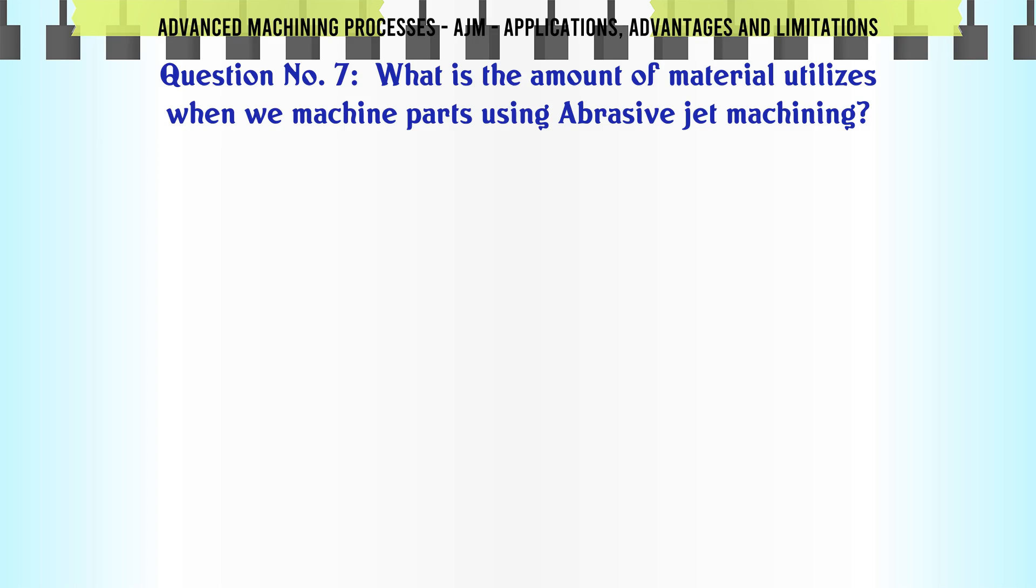What is the amount of material utilized when we machine parts using abrasive jet machining? Option A: Very low. Option B: Low. Option C: Medium. Option D: High. The correct answer is high.